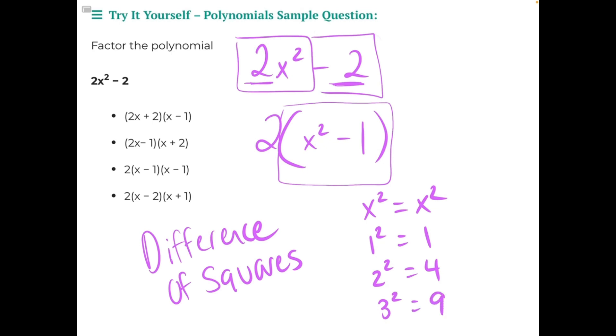So if you ever see a binomial like this where you see x squared minus 1 or x squared minus 4, x squared minus 9, or any other perfectly squarable number, then you are dealing with a difference of squares. And there's a special way that we can factor a difference of squares.